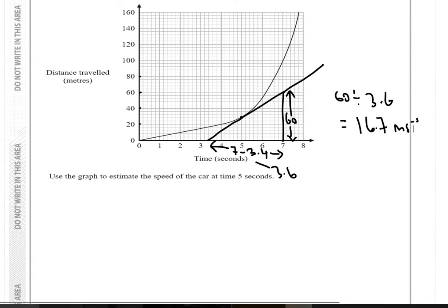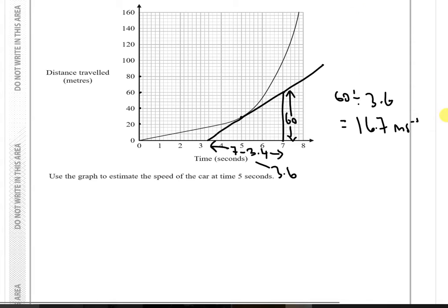Normally with estimations like this, the examiner will allow a margin of error by quite a bit. So don't worry about getting your sketch perfect — it doesn't have to be a work of art. But make sure you use a ruler. Looking at the exam solutions, the accepted range was from 11 to 19 metres per second, so your tangent could be quite varied and you'd still get the correct answer.